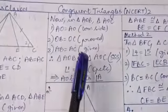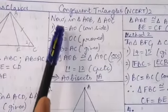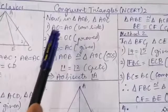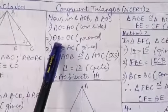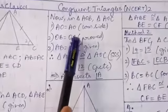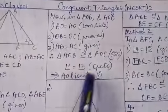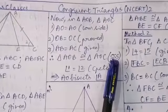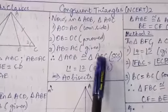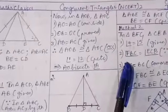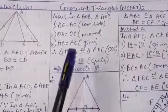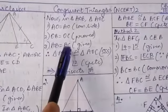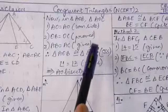To name the triangles correctly: AO and OB give triangle AOB, and AO and OC give triangle AOC. So triangle AOB is congruent to triangle AOC by the SSS congruence criterion. Now that the triangles are congruent, their corresponding angles are equal — so angle A of triangle AOB equals angle A of triangle AOC.